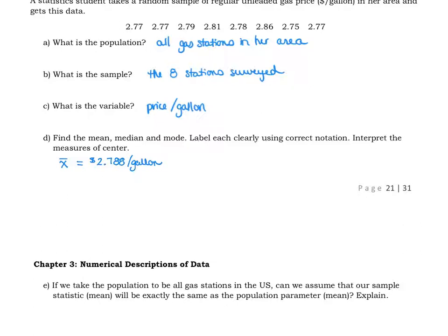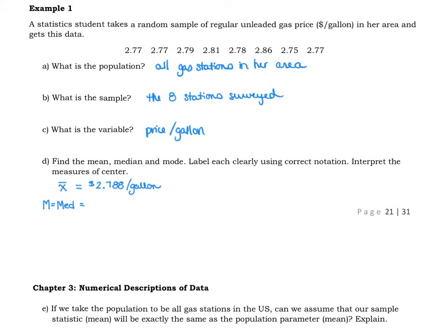For the median, the symbol for that we can use—some people just use a capital M, you can also use Med for median, or you can write out the word median. But capital M or Med is usually what you'll see. Remember for the median what you need to do is line up your data in order from largest to smallest or smallest to largest—it doesn't make any difference.